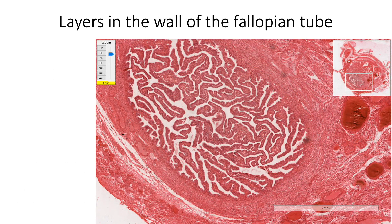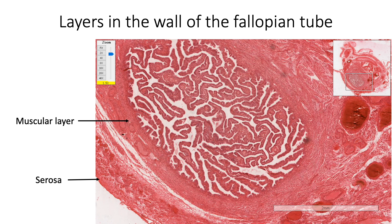Although the diameter of the lumen, complexity of the mucosal folding, and thickness of the wall may vary between its four segments, throughout its length the wall of the fallopian tube is made of three layers: the outer serosa, middle muscular layer, and inner mucosa.